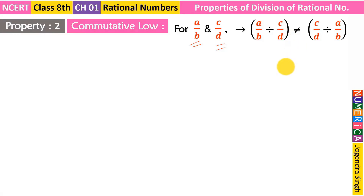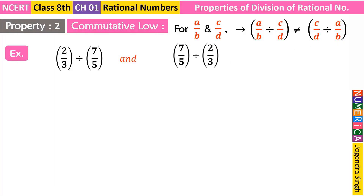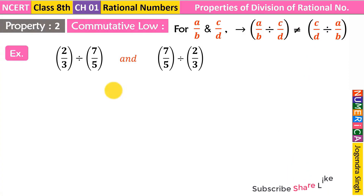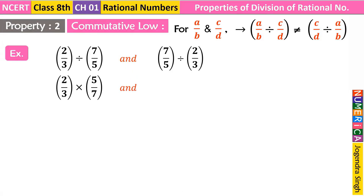After commuting, the result will not be equal. To understand this, we take an example: left side — 2/3 divided by 7/5; right side — same numbers after commuting: 7/5 divided by 2/3. We have not placed an equal sign between them yet, because we are checking whether they are equal or not. For the left side, convert division to multiplication and take the reciprocal of 7/5, giving 2 upon 3 into 5 upon 7.